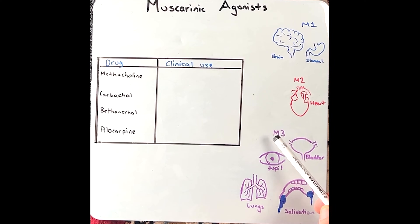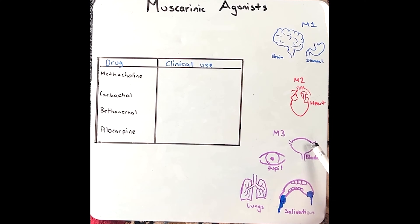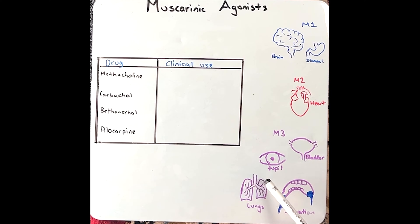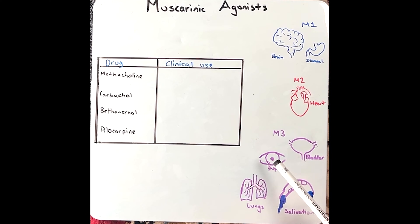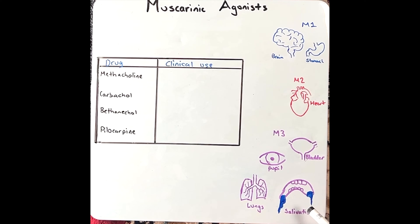M3 receptors are located in the smooth muscle of the urinary bladder, the gastrointestinal tract, the bronchi, and the pupil. They also activate glandular tissue to increase lacrimation and salivation.